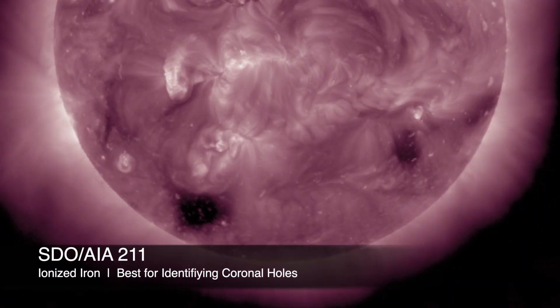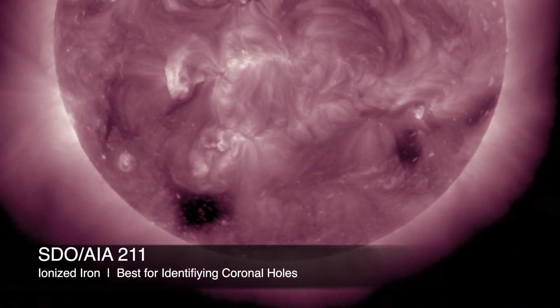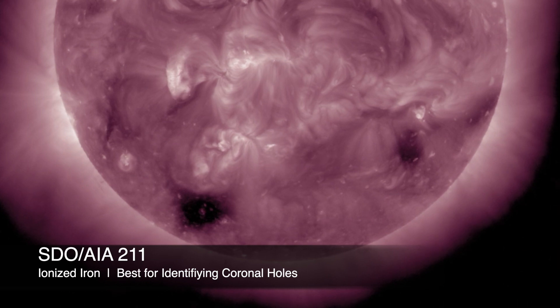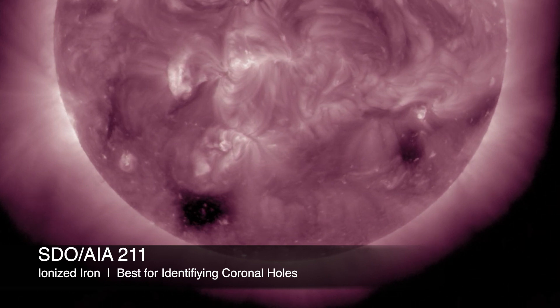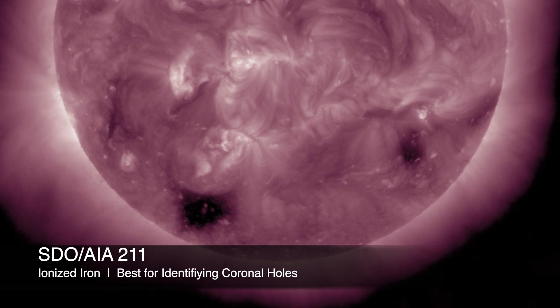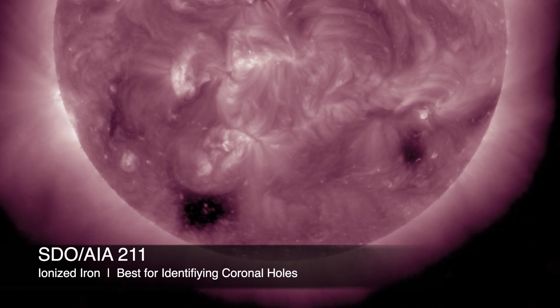The pink 211 view is back at ionized iron, and this is one of the best ways to view those dark coronal holes. While not the only view that shows them, it does reveal them better than all of the others.